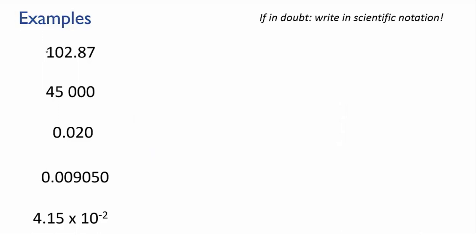Okay, 102.87. This starts with a non-zero digit, the 1, and goes on from there. The only zero in it is a captive zero, which we know is significant. So this number has 1, 2, 3, 4, 5 sig figs.